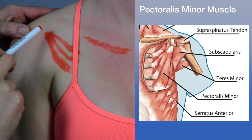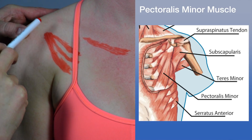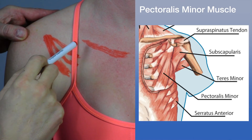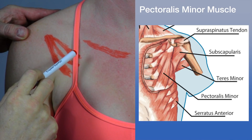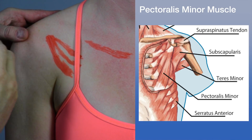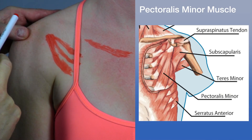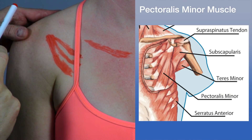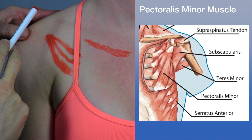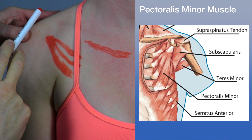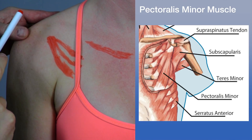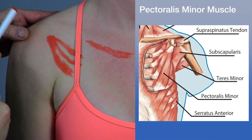The next muscle is the pectoralis minor, which originates from ribs three to five and inserts on the coracoid process. When the ribs are fixed, it pulls the scapula downward and forward, tilting it by lifting the inferior angle upward. When the scapula is fixed, it assists in inspiration by elevating the ribs.